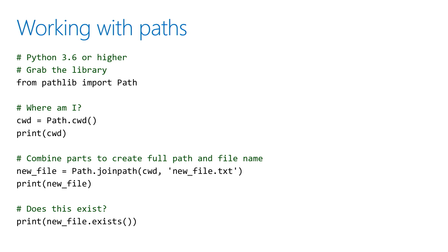The other thing you most commonly want to do is get a full path name — the directory name plus the slash or backslash and the file name together. You can actually build that using a wonderful function called joinpath, which will build you the correct structure of a directory name and file name combined.